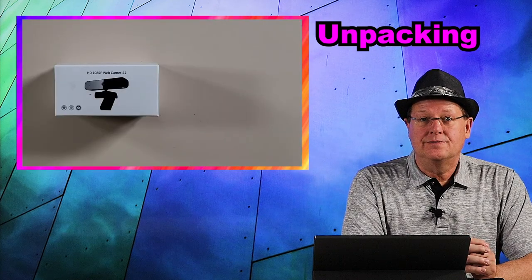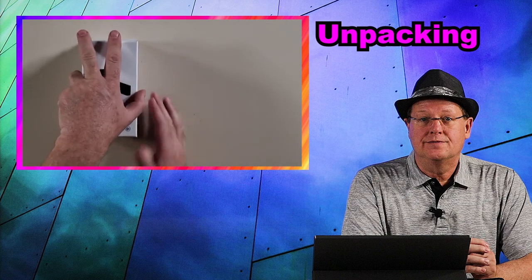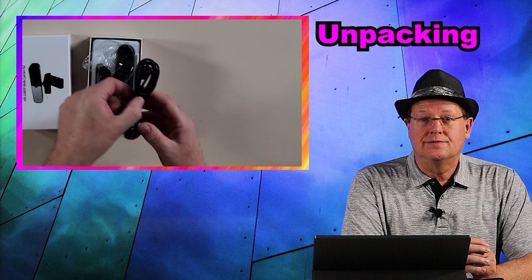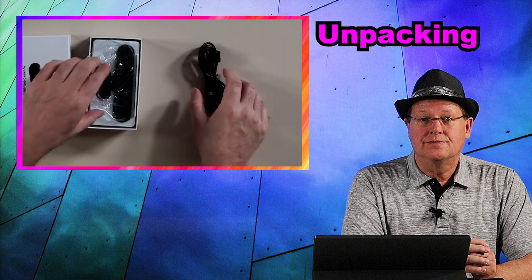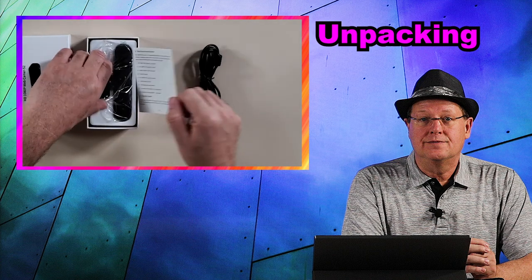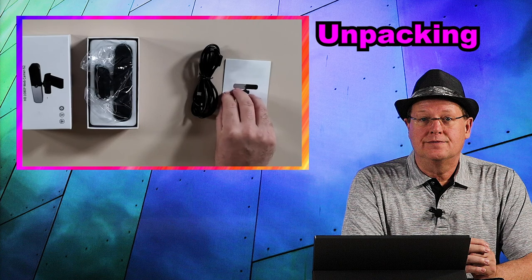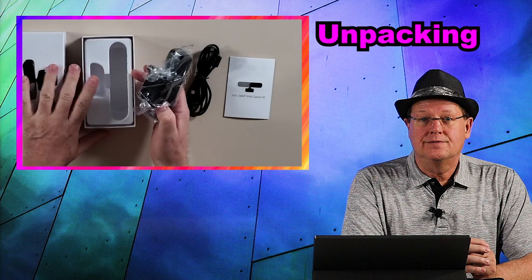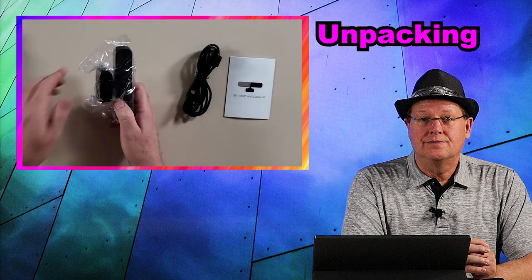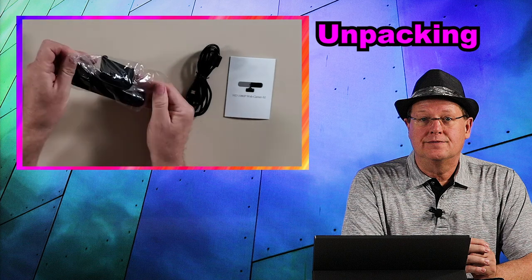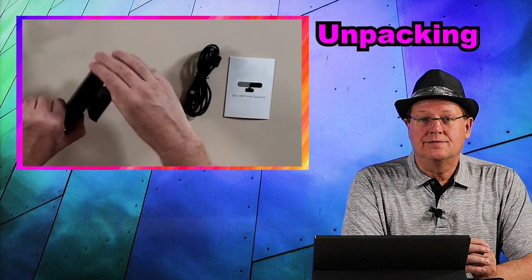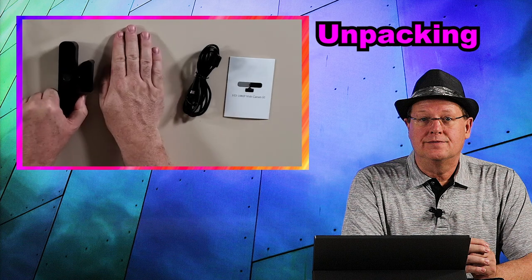It comes in a box like this. Since I'm not a very good packer, I just put the cord on top like you see here. The camera, here's your directions, and the camera comes in this nice plastic. And there it is in relation to the size of my hand.